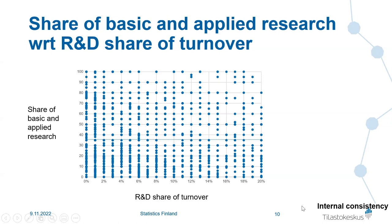But that is clearly not the case. The data points are spread all over the table. The regression line is almost totally flat — no difference whatsoever whether you spend one percent or twenty percent of revenue on R&D in terms of how much goes to basic or applied research. In the Finnish case, it clearly doesn't depend at all on the R&D intensity.